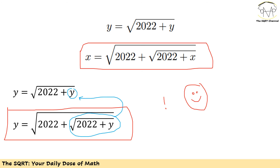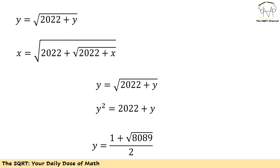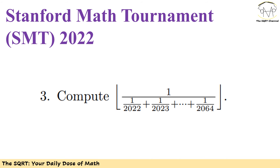This is really beautiful — instead of solving the complicated nested radical for x, I solve the simpler y = √(2022 + y). Squaring both sides: y² = 2022 + y, giving a quadratic. Since y must be positive (it's a square root), there is only one valid solution: y = (1 + √8089) / 2. So the sum of solutions is (1 + √8089) / 2.